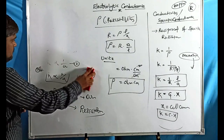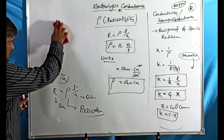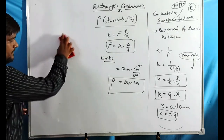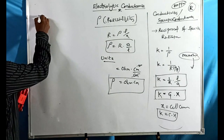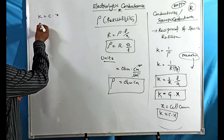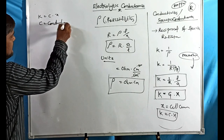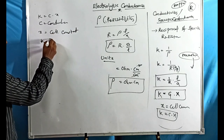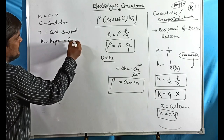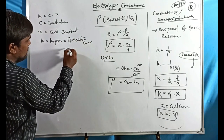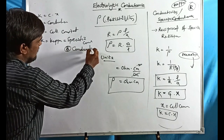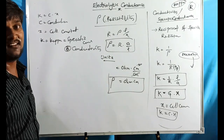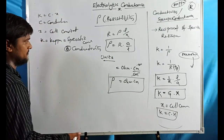To summarize: κ = C × X, where C (or G) is conductance, X is the cell constant, and κ (kappa) is specific conductance or conductivity. Based on these formulas, many previous year CSIR and GATE problems are based — so these are very important. Now let us find the units of cell constant and specific conductance.